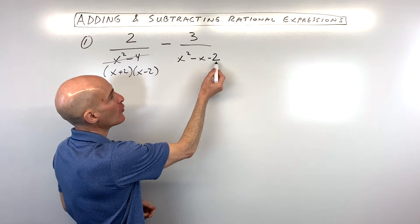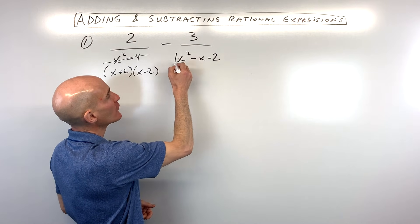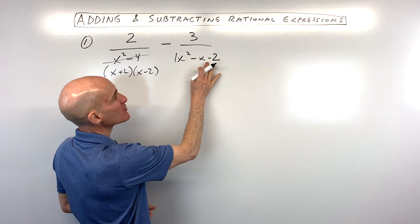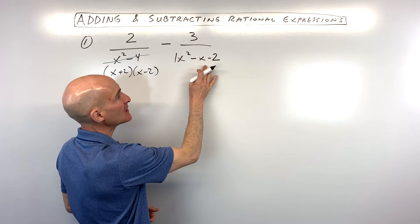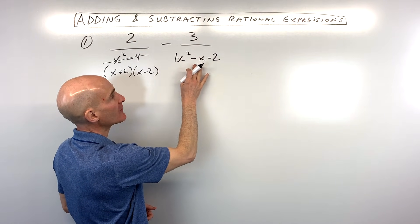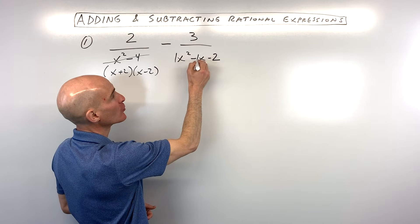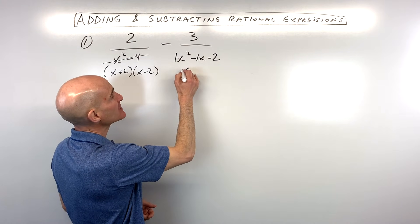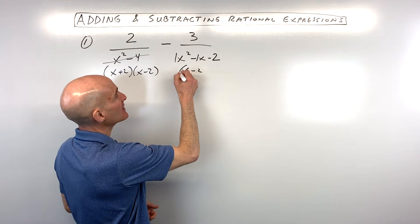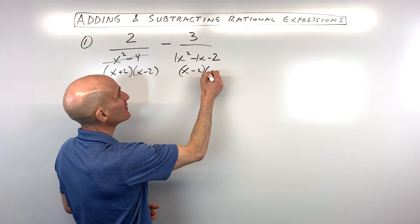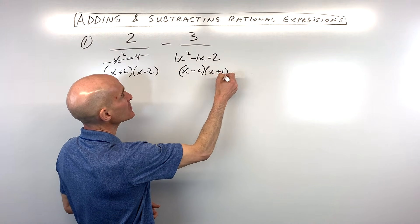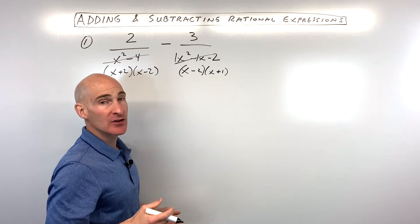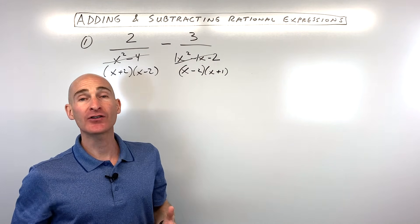Over here, this is a trinomial with a leading coefficient of 1. We just have to find two numbers that multiply to negative 2 but add to the middle coefficient, negative 1. That's going to be x minus 2 and x plus 1. If you need to, review my videos on factoring.